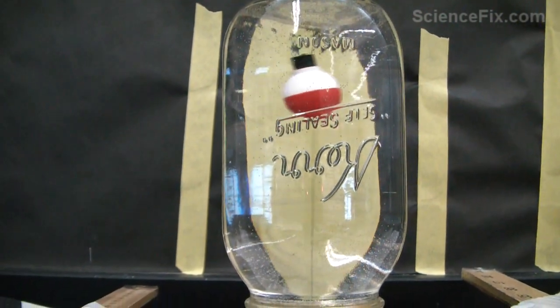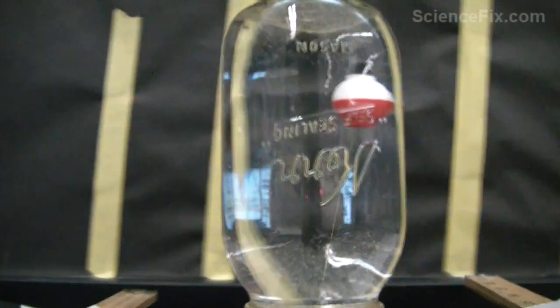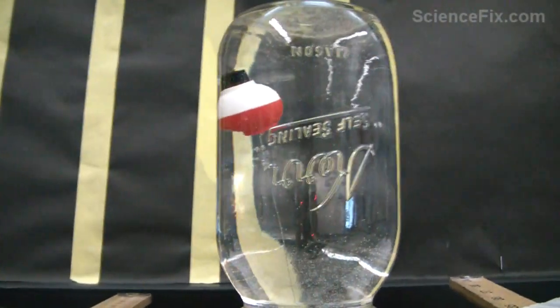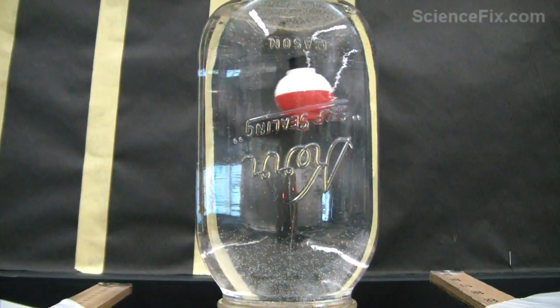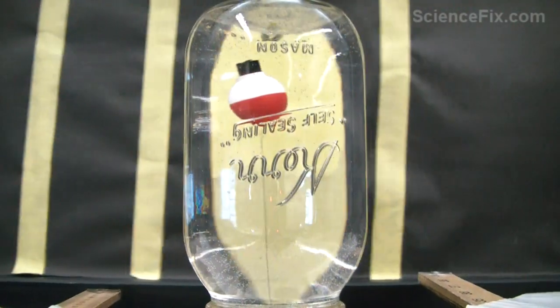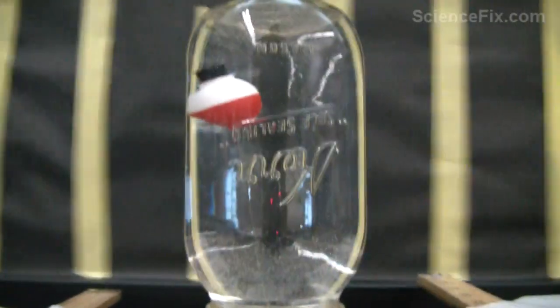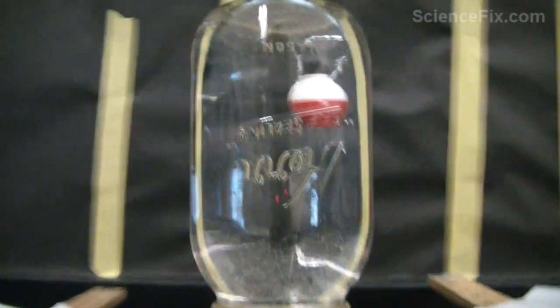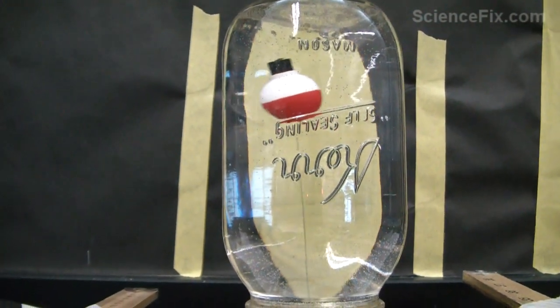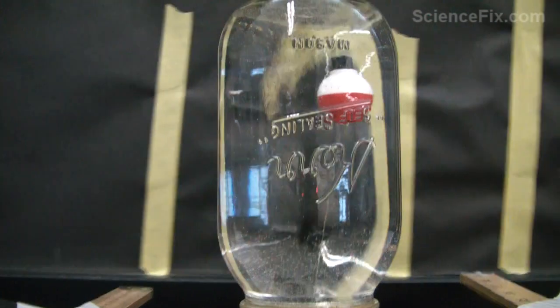The reason why this happens is because the water inside the jar has inertia. The water is at rest and wants to remain at rest until an outside imbalanced force is applied. So the water stays in its position, pushing the bobber forward during times of positive acceleration. During times of negative acceleration, the water has inertia and still wants to move forward, therefore pushing the bobber in the opposite direction.